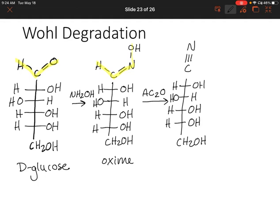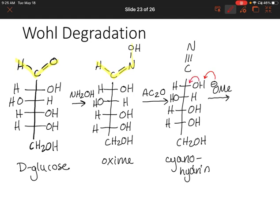In our last step, we're going to use an alkoxide base. This is going to cause our cyano group to leave. It's going to take a proton from our top chiral center hydroxy group, leaving electrons behind to form a double bond, so we're forming an aldehyde group again. But in the process, we're losing a carbon from the cyano group. This is how we shorten the chain.